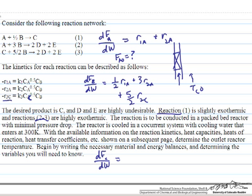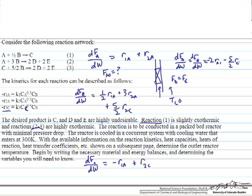For component C, it is formed through reaction 1 in a 1-to-1 stoichiometry with A, and consumed in reaction 3 — it is not formed in reaction 2. For D and E, every time you make a mole of D you also make a mole of E, so FD always equals FE. They are formed in reactions 2 and 3: 2 times the rate of consumption of A in reaction 2 (with a negative sign so the number increases), plus 5/2 times the rate of reaction of C through reaction 3. Both terms are positive, so D and E accumulate down the reactor.